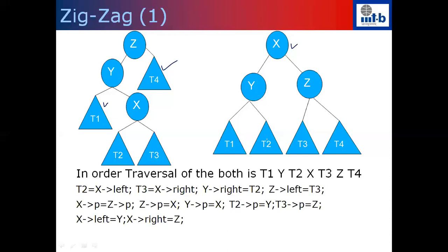The pointer changes for the left-right rotation are written below — if you do these pointer changes you get the tree on the right from the tree on the left. If maintaining parent pointers, update those as well; if not maintaining parent pointers you can ignore the parent pointer changes. Pause to verify that this rotation preserves the binary search property by checking the in-order traversal before and after.